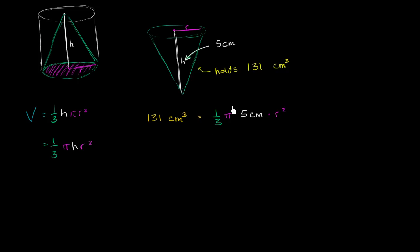Or if we wanted to solve for the radius squared, we could just divide both sides by all of this business. And we would get radius squared is equal to 131 cubic centimeters. You divide by one third, that's the same thing as multiplying by three. And then of course you're going to divide by pi, and you're going to divide by five centimeters. Now let's see if we can clean this up. Centimeters will cancel out with one of these centimeters, so you'll just be left with square centimeters only in the numerator.